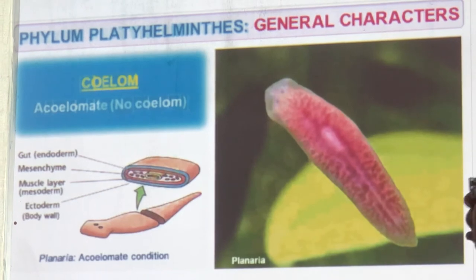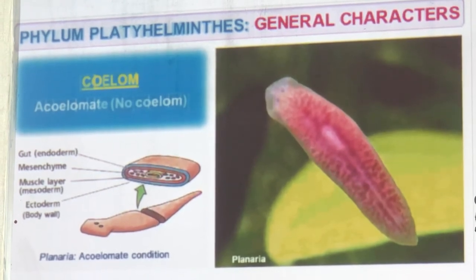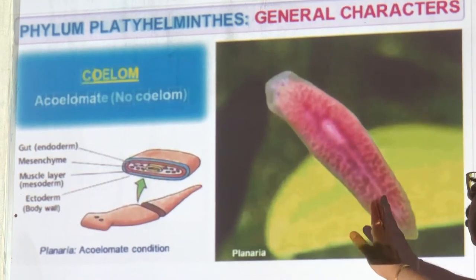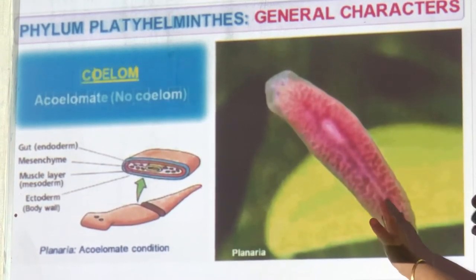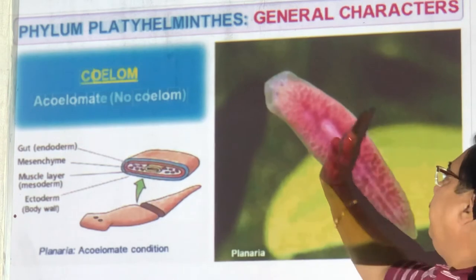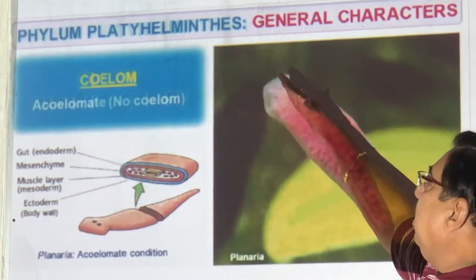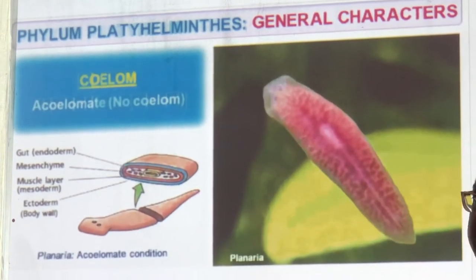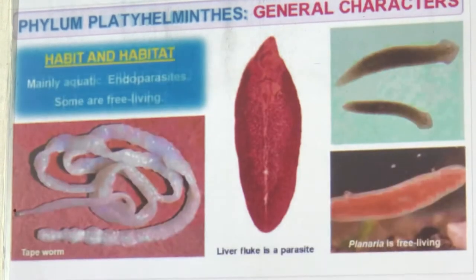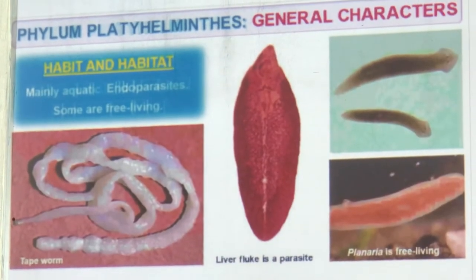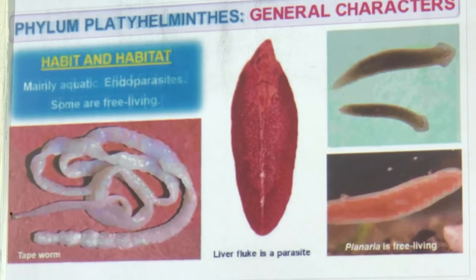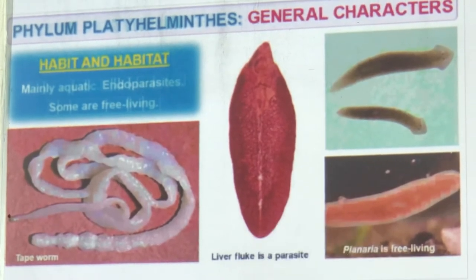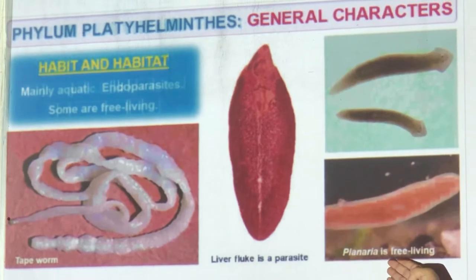The coelom is not developed — it is an acoelomate condition. Planaria shows the highest power of regeneration — you can cut it into 32 pieces and all 32 will become Planaria. They are mostly aquatic; some are endoparasites and some are free-living. Endoparasite: tapeworm. Free-living: Planaria. Liver fluke is a parasite in sheep.